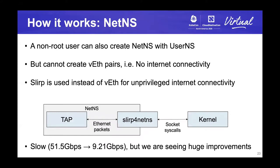Next is network namespaces. A user can also create network namespaces with user namespaces, but cannot create virtual Ethernet pairs for internet connectivity. So instead of virtual Ethernet pairs, we need to use slirp, which translates Ethernet packets into socket syscalls. This is slow, but we are seeing huge improvements this year. I will talk about this topic later.